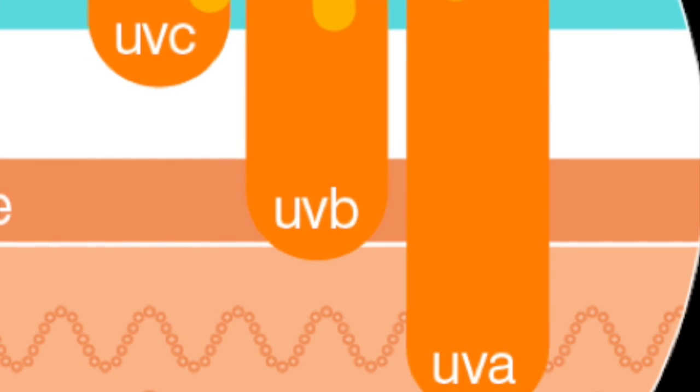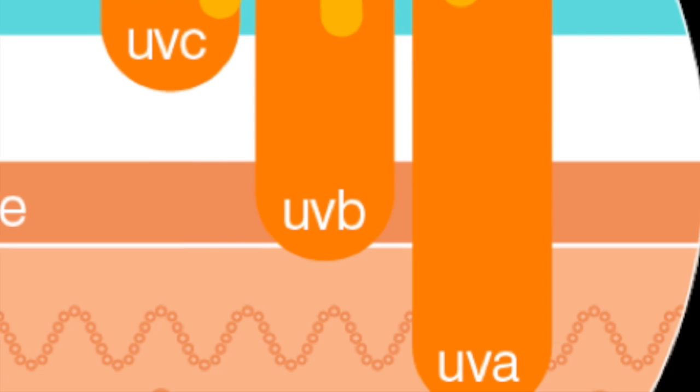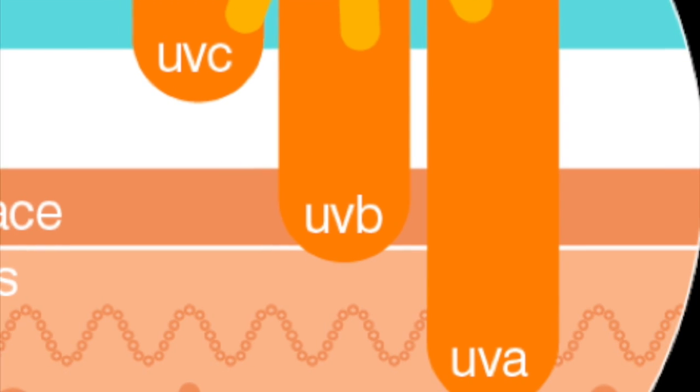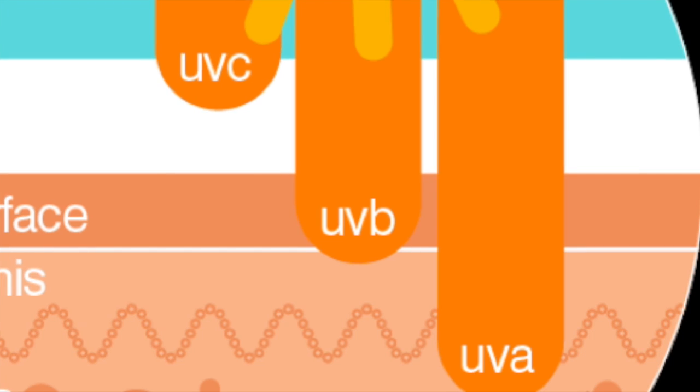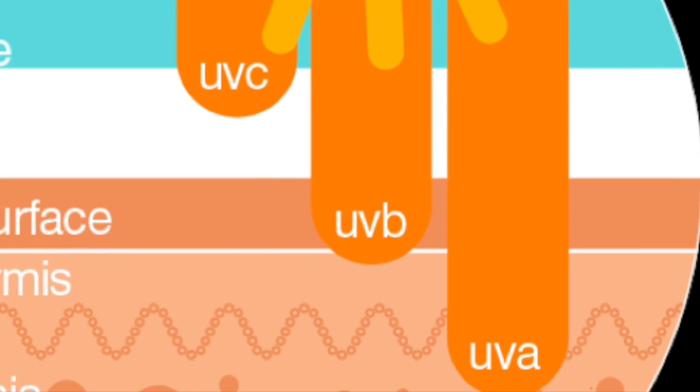95% of the sun's energy that reaches Earth is UVA radiation. UVA radiation causes skin cancer by penetrating deep into the skin, which leads to indirect DNA damage.